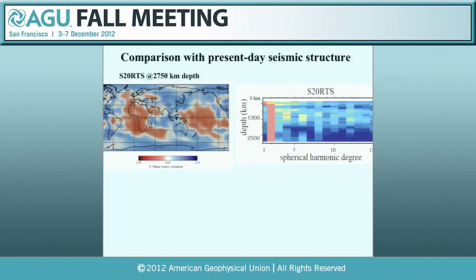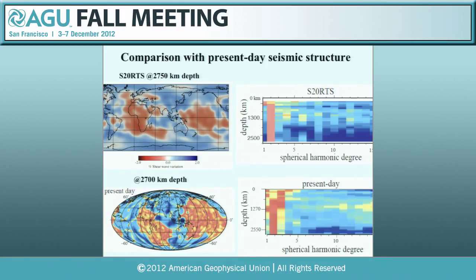First I want to show some predictions. The seismic results and the depth-vs-spherical-harmonics spectrum diagram at particular depths, compared to the model prediction for the present day — these two pictures are really quite similar to each other, and the same can be said for the spectrum. We can conclude that our model can reproduce the present-day seismic structure reasonably well.